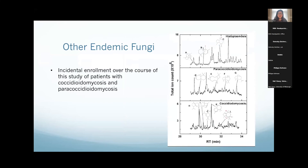In this study we also accidentally enrolled a patient who had coccidioidomycosis and paracoccidioidomycosis, and found that these patients have a completely different sesquiterpene signature from patients who have histoplasmosis — quite distinct from anything we've seen in aspergillosis or mucormycosis. We're now starting a study in collaboration with Dr. Fariba Donovan at the University of Arizona, Tucson, enrolling patients presenting with a community-acquired pneumonia syndrome, about a third of whom she's found are actually patients with primary acute coccidioidomycosis.